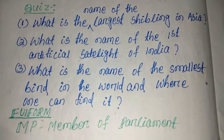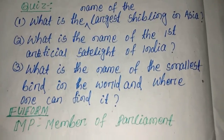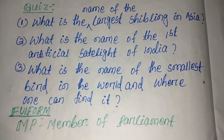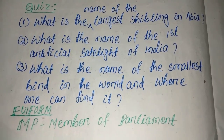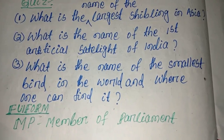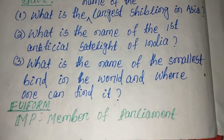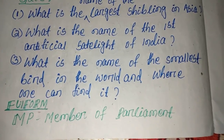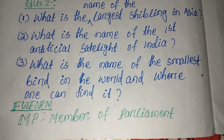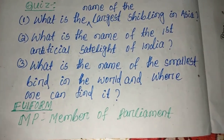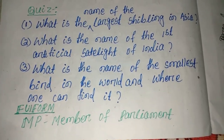Today's class has a quiz for you. Quiz number 1: What is the name of the largest river in Asia? Second question: What is the name of the first artificial satellite of India? Third question: What is the name of the smallest bird in the world and where can one find it? Try your level best and you can get the answers in the next class.